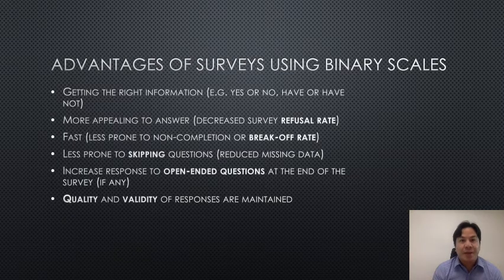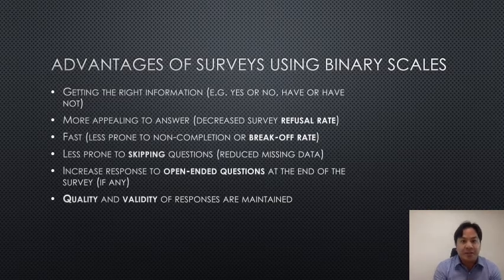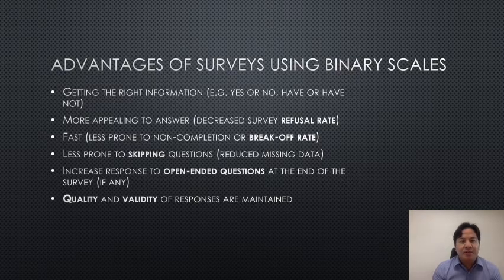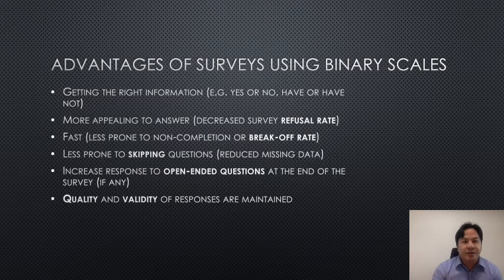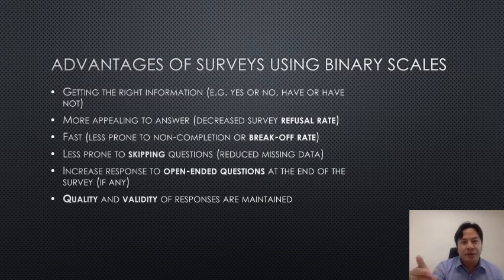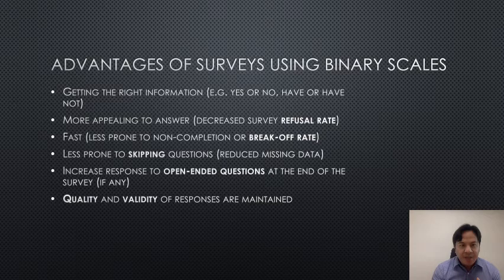If you decide to use binary scales in your survey forms, these are the advantages. You get the right information — it's exact, it's either a yes or a no, have or have not. It is more appealing to the client so that there is decreased survey refusal. If they see there are just two choices, it's faster, and if it's fast, it's less prone to break-off rate when they stop in the middle and return their survey form to you. It is also less prone to skipping questions, and it increases the response to open-ended questions at the end of your survey.